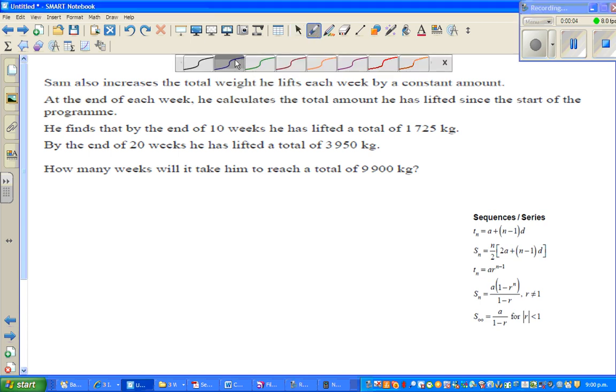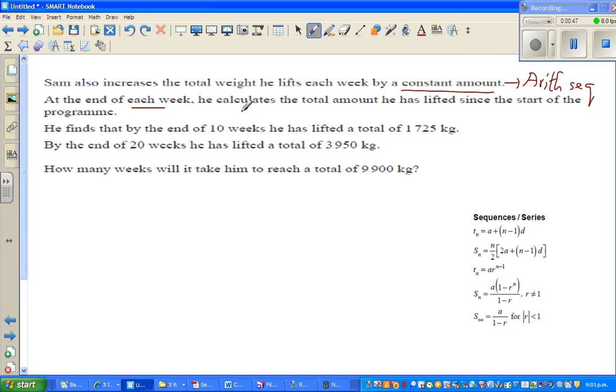Continuing with the videos on arithmetic sequence, this is the third video in that series. This would be an excellence question for NCEA level 2 on the topic of sequence and series. Sam increases the total weight he lifts each week by a constant amount. This phrase 'constant amount' tells me this is an arithmetic sequence. At the end of each week he calculates the total amount he has lifted since the start of the program.